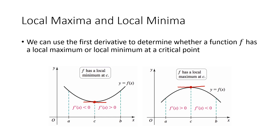In the picture on the left, to the left of our critical point my slope is negative — if I were to draw tangent lines they would all have negative slopes — and to the right of that critical point the slope is positive. So because the slope is changing from negative to positive, my function was going down and then it started going back up. What I have here is a local minimum.